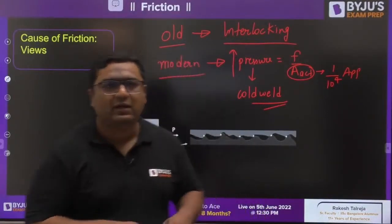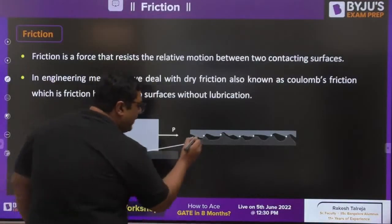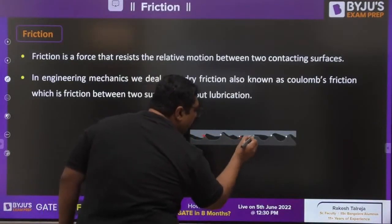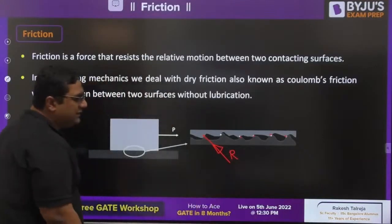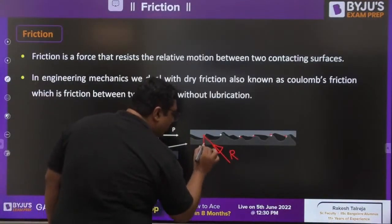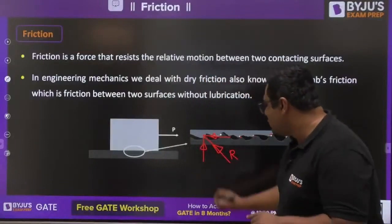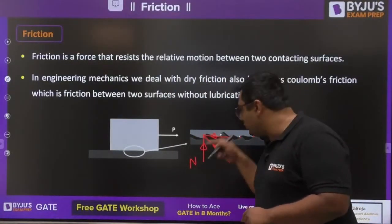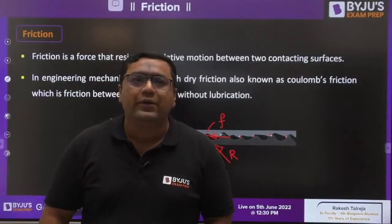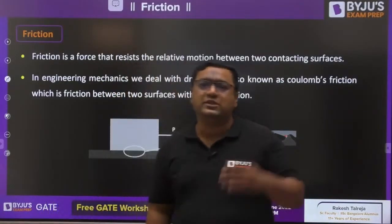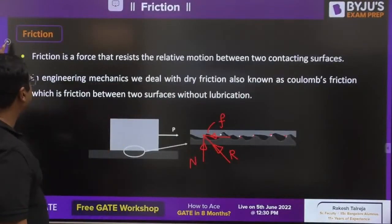Now moving further to the types of friction. We already know there are multiple contact points between two bodies, and a resultant contact force acts. It has two components — one is vertical and the other is horizontal. The vertical component is the normal reaction and the horizontal component is friction. So friction is the horizontal component of the net resultant contact force.